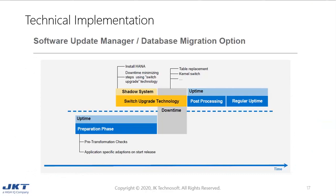I'll now explain how the S4HANA migration is done using the database migration option of the Software Update Manager tool by SAP, commonly known as the SUM tool. This tool follows the switch upgrade technology, where a shadow system is created in the preprocessing roadmap step and all relevant data for migration is imported to the shadow system. During the downtime, the shadow kernel is switched with the original system, and the shadow system becomes your upgraded system, after which the post-processing activities are done.